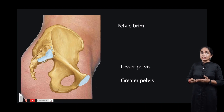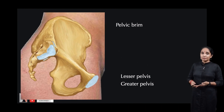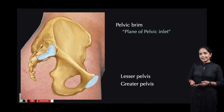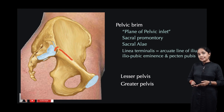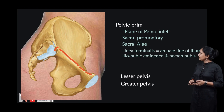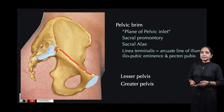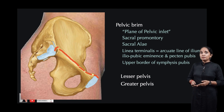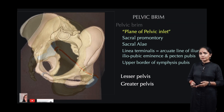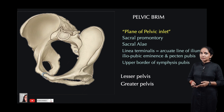Now, what structures form the boundary of the pelvic brim? The pelvic brim is also called the plane of the pelvic inlet, and it is formed by these structures: the sacral promontory and the sacral ala, then the linea terminalis — which is formed by the arcuate line of the ilium, the iliopubic eminence, and the pecten pubis — and finally the upper border of the symphysis pubis. All of these together form the pelvic brim.